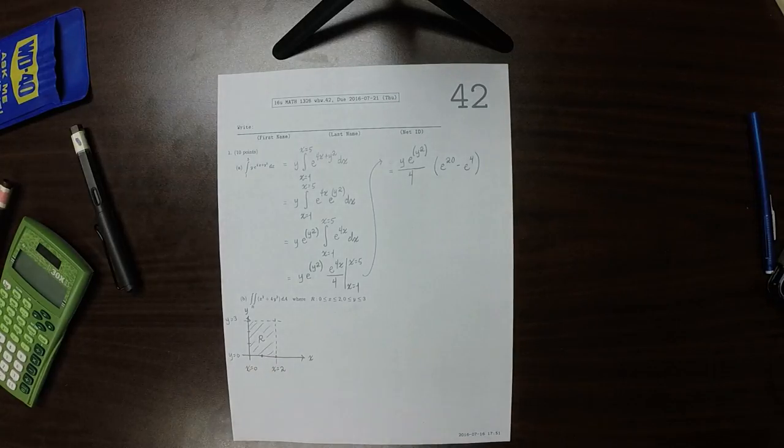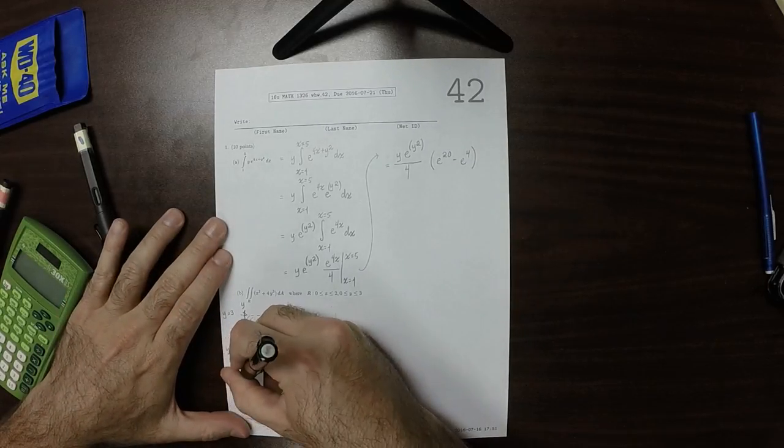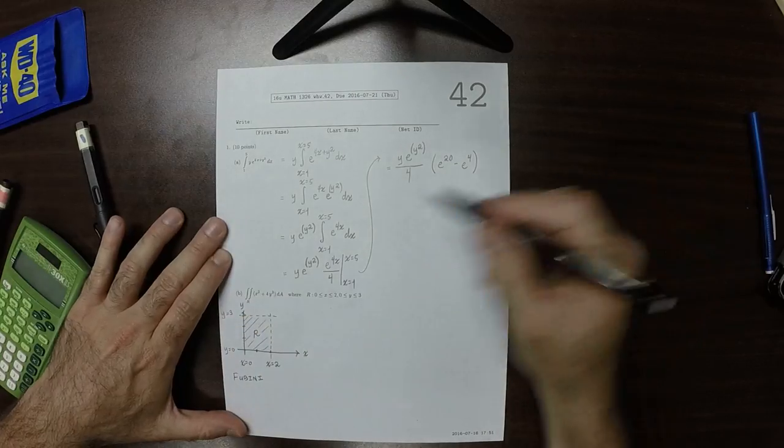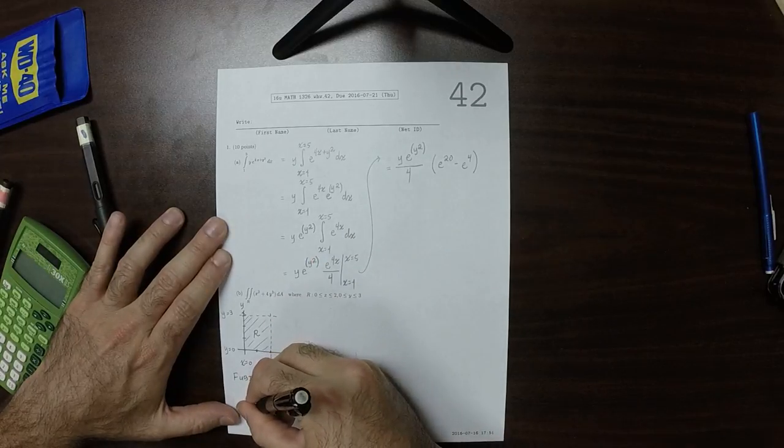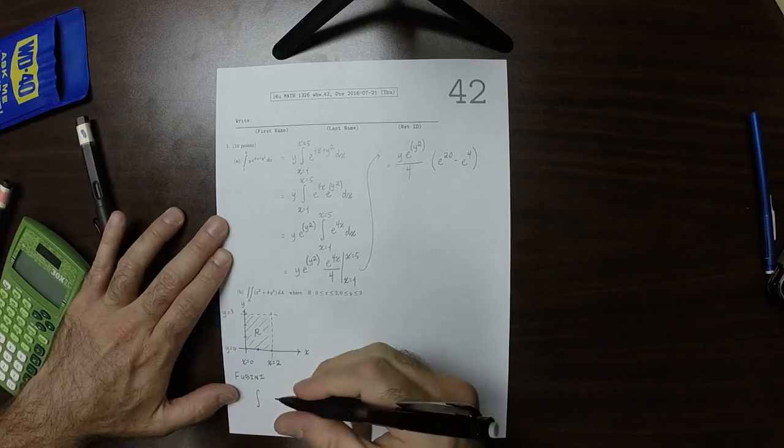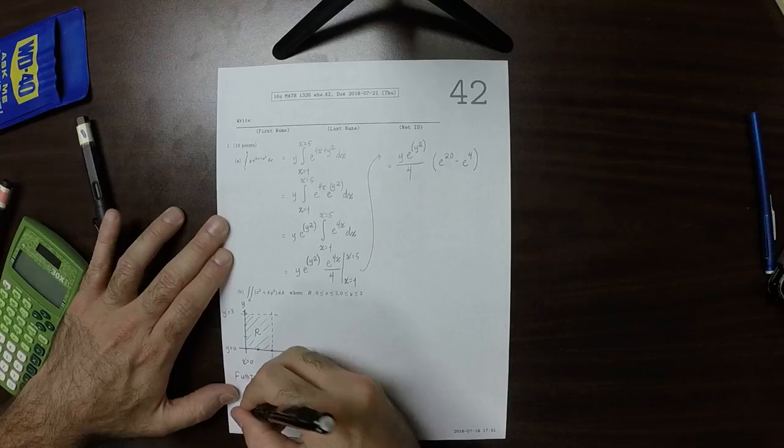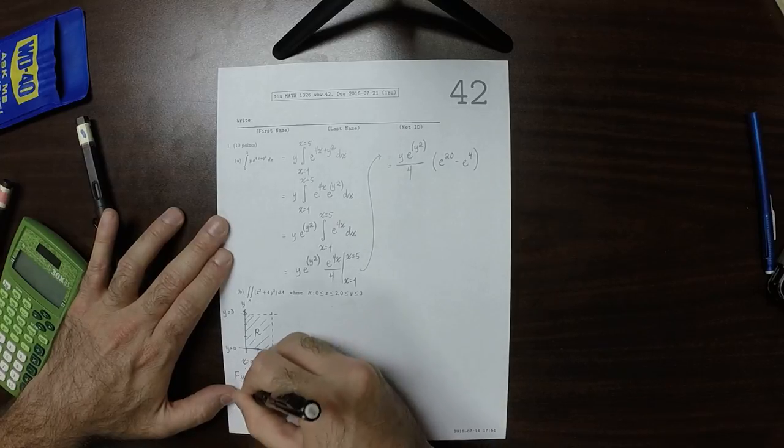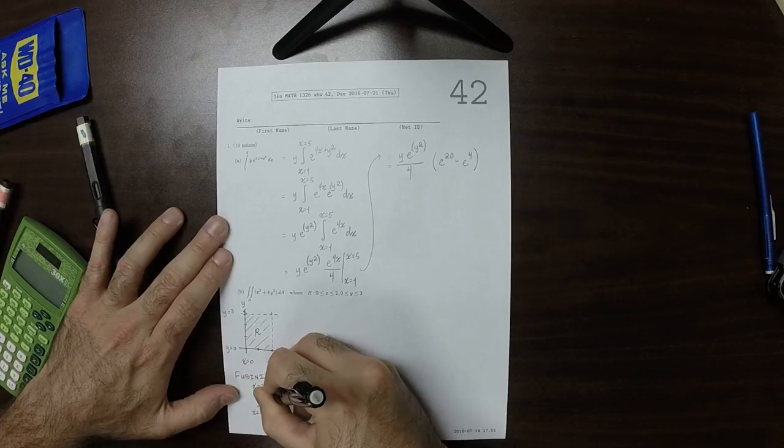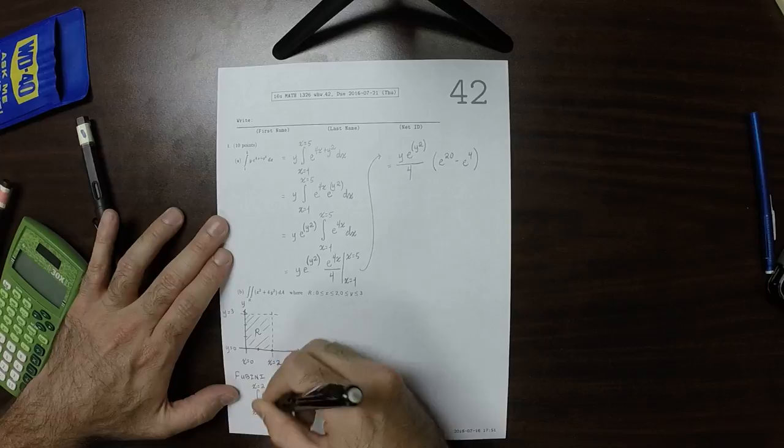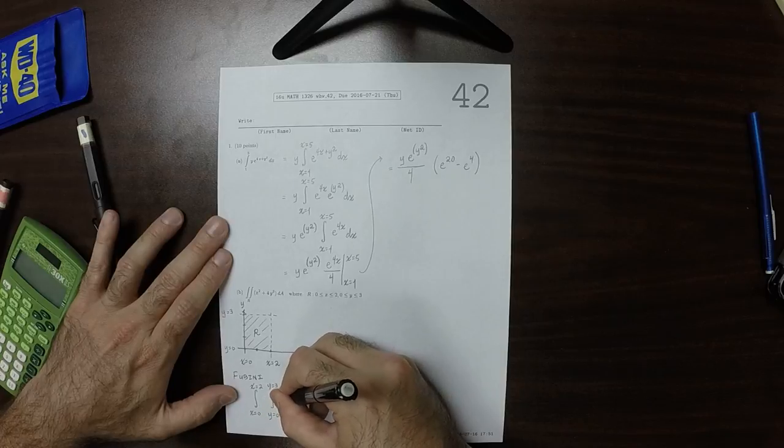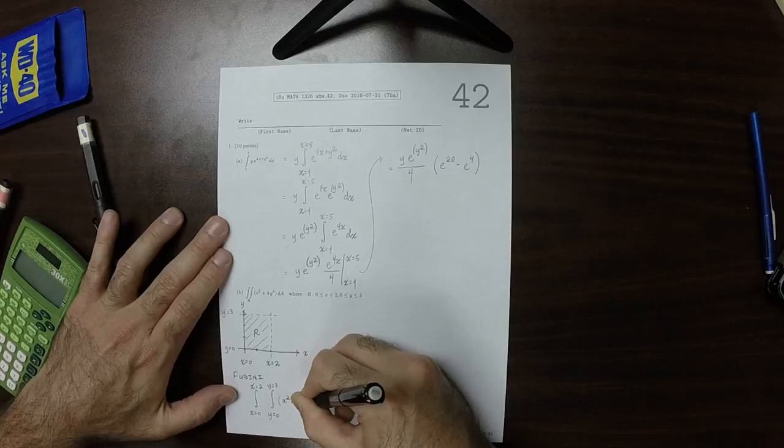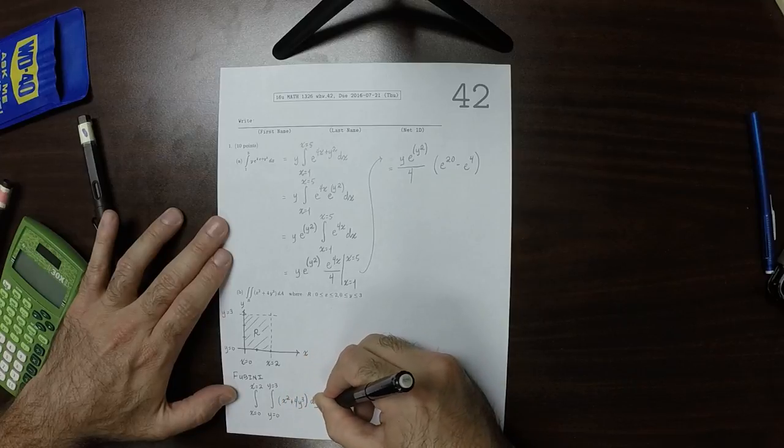So, the double integral over a rectangular region, we can use Fubini's theorem. Which says that we can convert a double integral to an iterated integral. And because it's a rectangle, we can do it in any order that we like. So, I'll make the x's outside. So, x is 0 to x is 2. Integral. Y is 0 to y is 3. This expression, x squared plus 4y cubed. dy, dx.